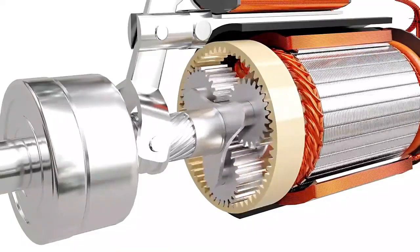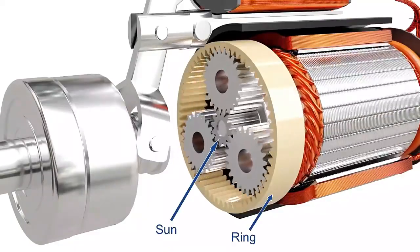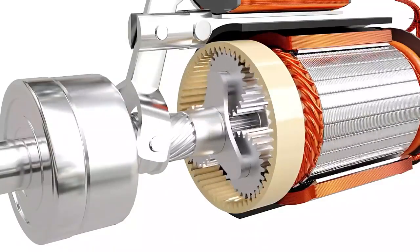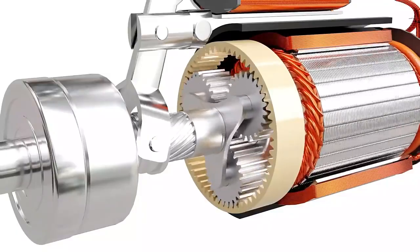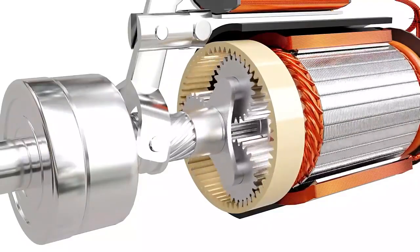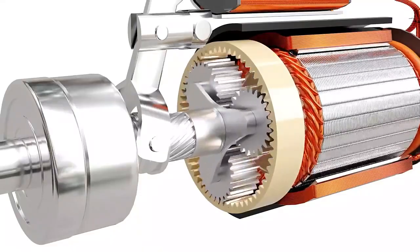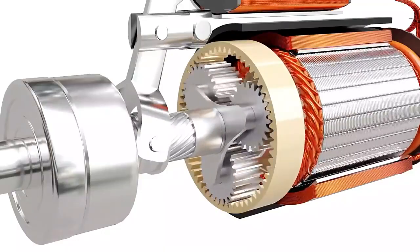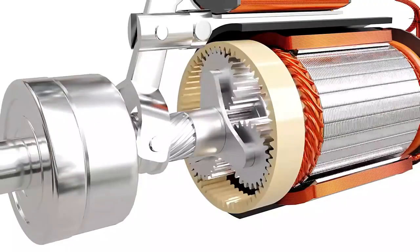It consists of a sun gear, a ring gear, a carrier, and a set of planet gears. In starters, the ring gear is fixed, the sun gear is the input, and the planet carrier is the output. For the setup shown here, the gear ratio is 7 to 1. The combined gear reduction results in enough torque to spin the engine.